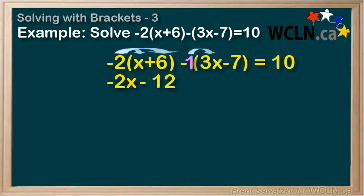So negative 1 times positive 3x is negative 3x. Negative 1 times negative 7 is positive 7.